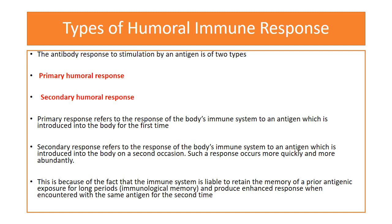When the B lymphocyte is stimulated or activated by an antigen it secretes antibody, and this antibody response is of two types: primary humoral response and secondary humoral response. Primary response refers to the response of the body when the antigen is introduced for the first time, while the secondary response is when the same antigen is introduced for the second time. Primary response is weak and short-lived, while the secondary response is long-lived, more enhanced, and potent.